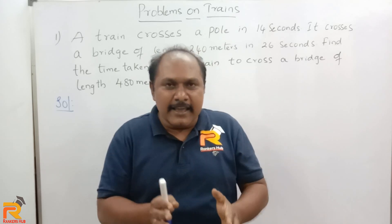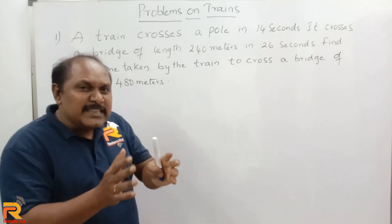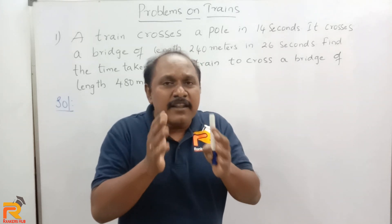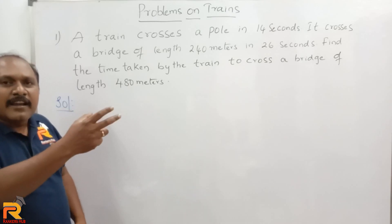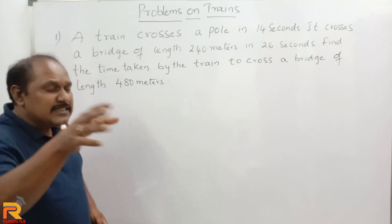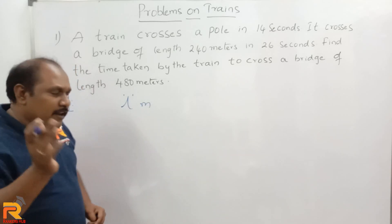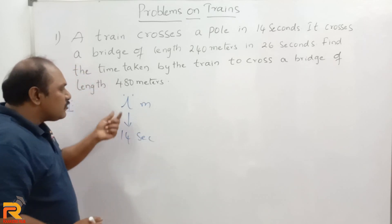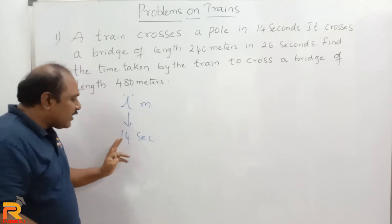Now let us see the easy method. To cross a pole, the train is taking 14 seconds. What is the train doing in those 14 seconds? It is traveling a distance equal to the length of the train. We do not know the length of the train, so let us assume the length of the train is L meters. The train will travel L meters in 14 seconds, because to cross a pole, the train has to travel a distance equal to its own length.